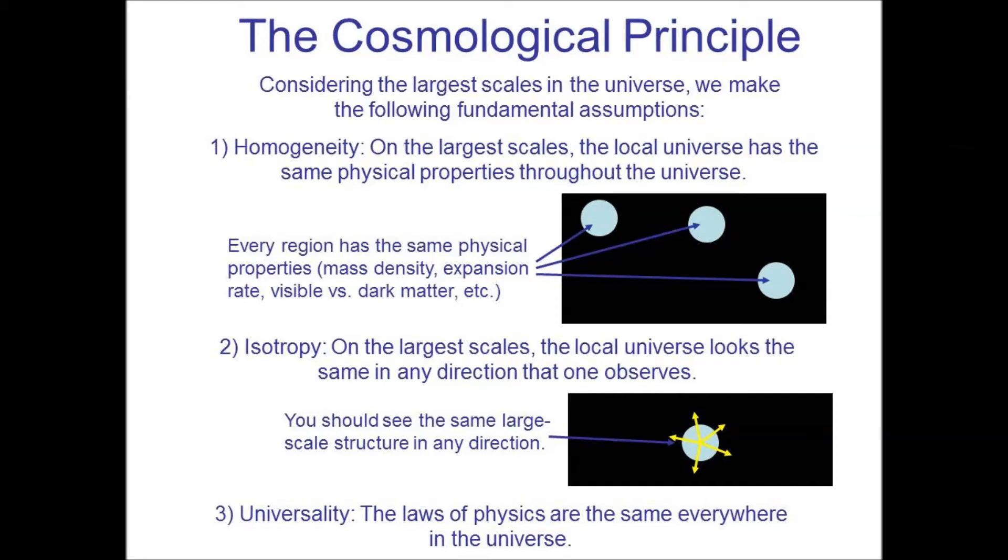The first one is called homogeneity. It says on the largest scales, the local universe has the same physical properties throughout the universe. We look at our galaxy, a spiral galaxy made up of atoms, a certain amount of dark matter, O stars through M stars. Basically all the laws we've learned about the nature of things are the same throughout the universe. There could be regions very far away that are completely different, that don't have dark matter at all, where star formation works very differently, with different types of stars. We don't think that's true, but it's possible. This assumption has to be made because it's impossible for us to know this. We cannot be in all places in the universe and verify that all the physical properties we see around us are the same throughout.